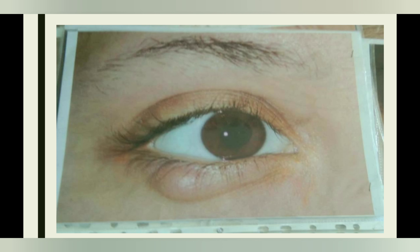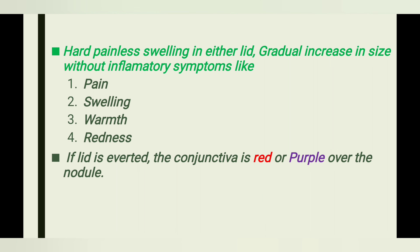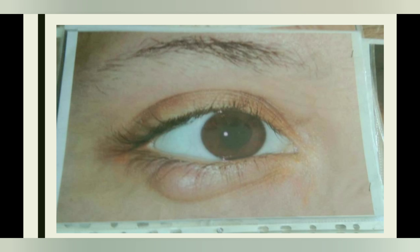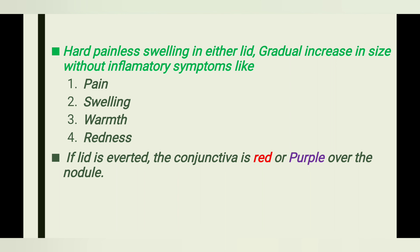It can be differentiated from hordeolum internum and externum by the fact that the cyst will be present some millimeters away from the eyelid margin. If the cyst is present directly at the lid margin, then it is hordeolum internum or externum. But if it is one or two millimeters away from the lid margin, it is chalazion.